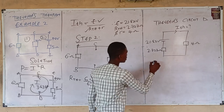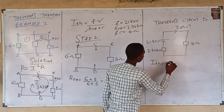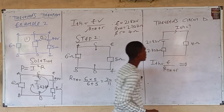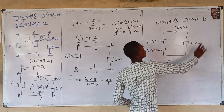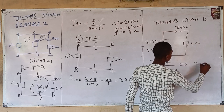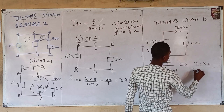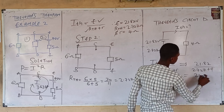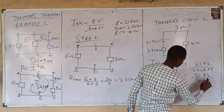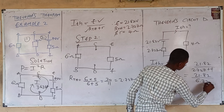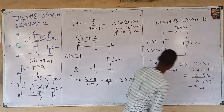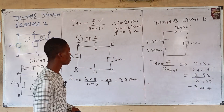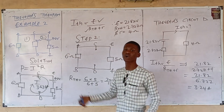Solving for I_Thévenin using the formula I = E / (R_th + R_L): I_Thévenin = 21.82 / (2.727 + 4) = 21.82 / 6.727 = 3.24 amperes. That is the current through the 4-ohm resistor.